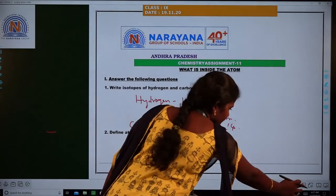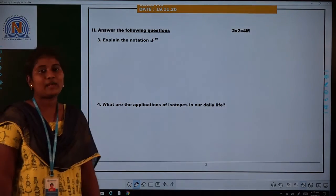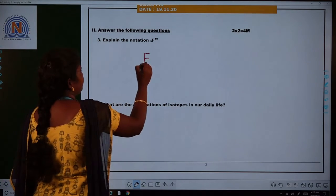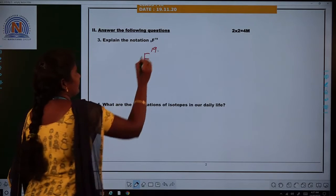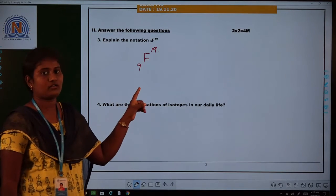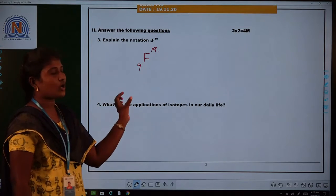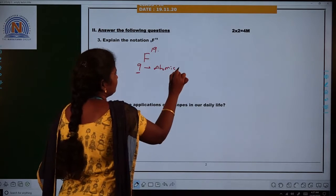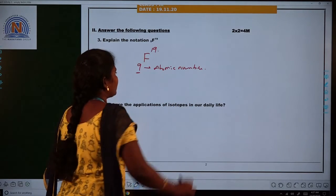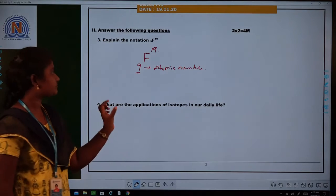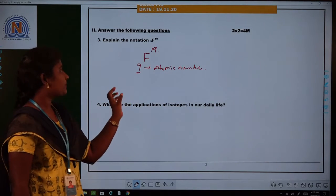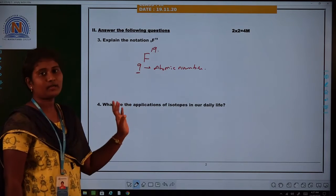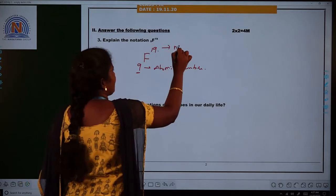See the third question: Explain the notation F-9-19. What does F-9-19 mean? Here F is the symbol of the element fluorine. The atomic number—here 9—is represented on the left side, left bottom of the element.